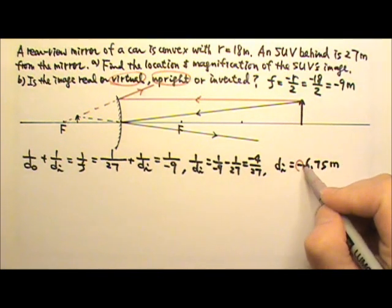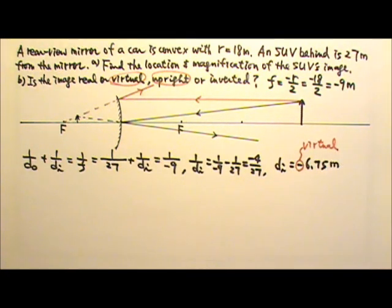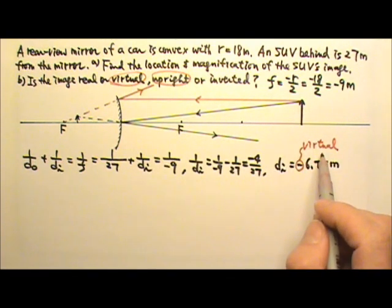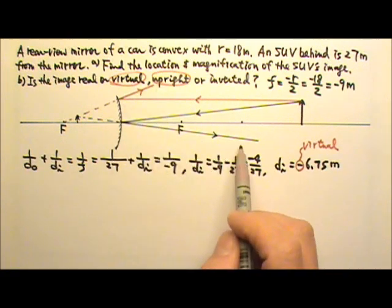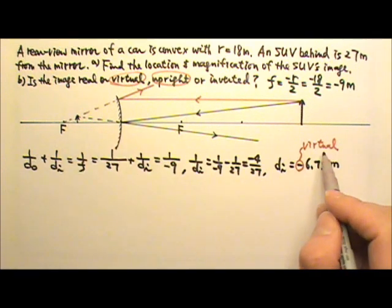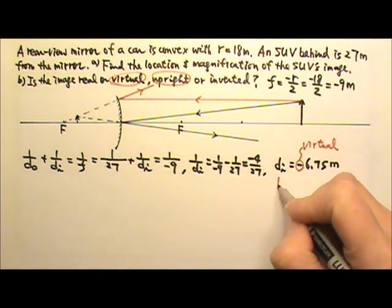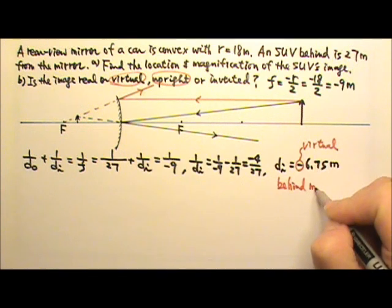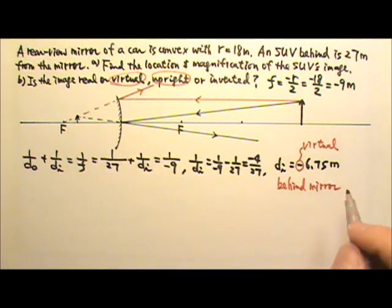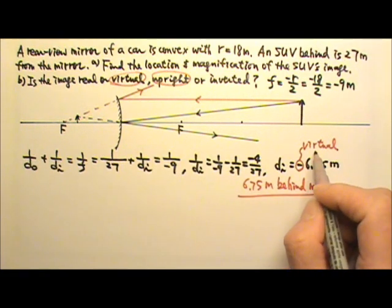This gives us negative 4 over 27, so DI is negative 6.75 meters. When DI is negative, that means the image is a virtual image. Because a virtual image formed by a mirror is created by ray extensions, the image must be behind the mirror — 6.75 meters behind the mirror. No real light rays reach behind the mirror.